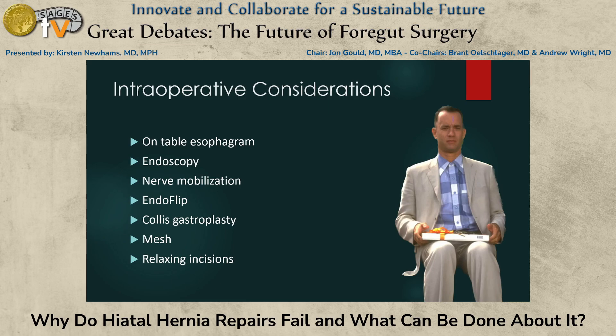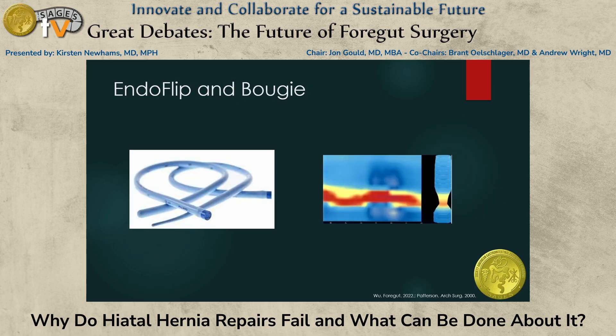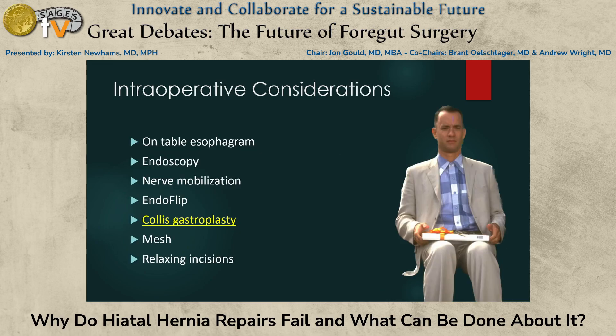Once you've committed to surgery, there are a multitude of intraoperative techniques that can be deployed, but like a box of chocolates, it is hard to know what you will encounter, so it is important to have these tools at your disposal. An on-table esophagram can help define anatomy, emptying, and leak. Intraoperative endoscopy can identify takedown of prior fundoplication and injury, as well as assess leak. Nerve mobilization is important to identify anatomy and provide length to the esophagus. EndoFLIP is a nice intraoperative adjunct — it can help determine if you've released any outflow obstruction identified preoperatively and help you tailor your fundoplication. Long-standing evidence supports fundoplication over bougie to help reduce dysphagia rates.